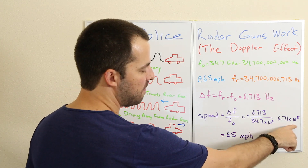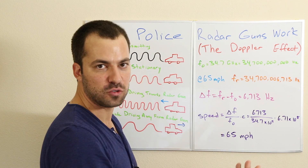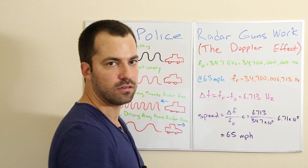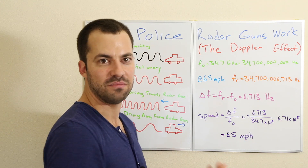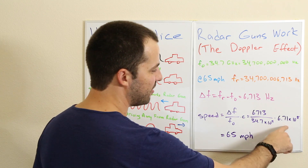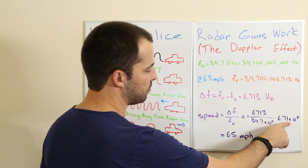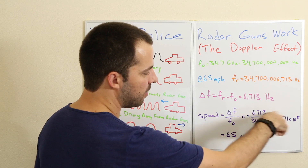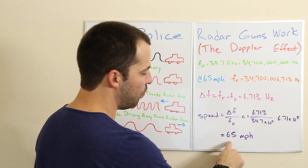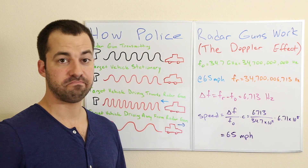The speed of light is 3 times 10 to the 8 meters per second, or 671 million miles per hour. So we've got 671 million miles per hour, plug it all in, punch it in the calculator, and you wind up getting 65 miles per hour.